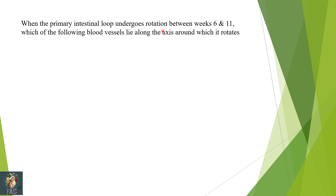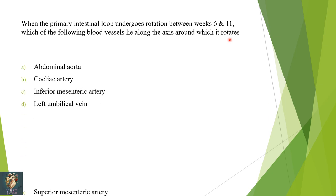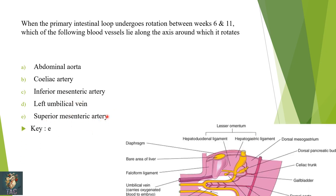Next is a very important MCQ present in many exams: during primary intestinal loop rotation between weeks six and eleven, which blood vessel lies along the axis around which it rotates? Options are the abdominal aorta, celiac artery, inferior mesenteric artery, left umbilical vein, and superior mesenteric artery. The correct option is the superior mesenteric artery, because the midgut loops rotate around the axis formed by the superior mesenteric artery.